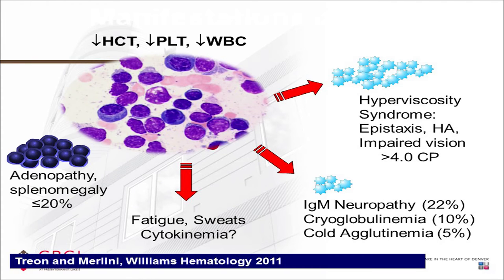This is a commonly used slide that appears in virtually every WM talk, from Drs. Steve Treon and Gianpaolo Merlini. Here is another example of a bone marrow. Some cells here are more lymphoplasmacytic, and some look more like a myeloma cell or plasma cell — this is very typical lymphoplasmacytic disease.